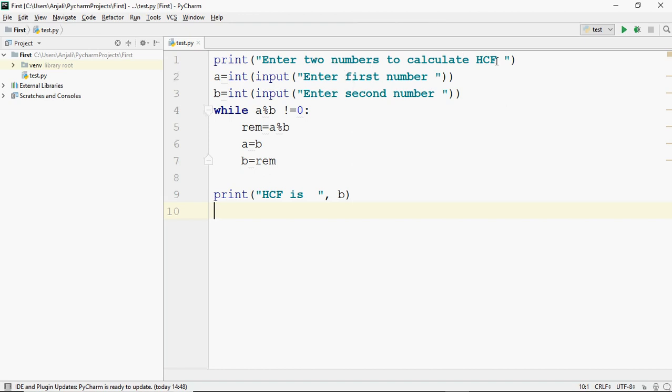This is our program. I ask first to enter two numbers to calculate HCF. The first number input, the second number input, both are integers. Then a simple while loop: while A mod B is not equal to 0, what do we do? A mod B, the remainder, is put in rem. B which was divisor becomes A, and rem becomes B. So this loop is running. These three statements are in the loop with proper indentation. Until this condition is true, the three statements will be repeated. When the remainder becomes 0, the loop exits and we print HCF is B.